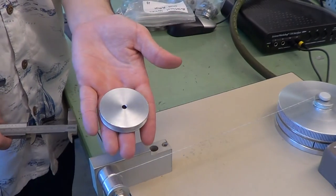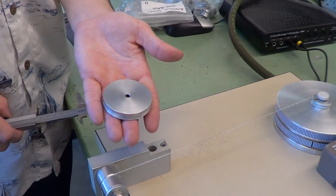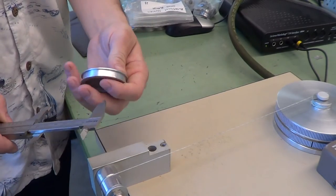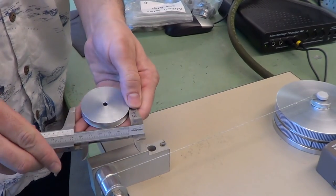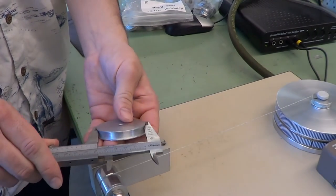For the disc method, we look at how much it accelerates and the radius of this disc. So we need to measure the inside radius of the disc.